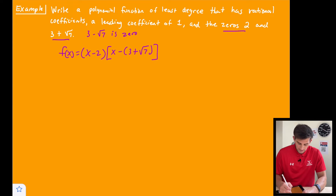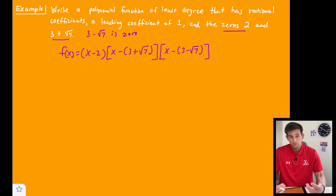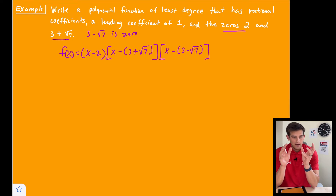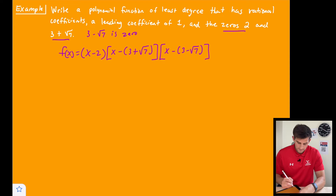So we can use that as well and plug in x minus (3 minus root 7) as another zero. Now we're going to regroup our two zeros that have the brackets — instead of putting parentheses around 3 plus root 7 and 3 minus root 7, we're going to move those parentheses to be around x minus 3.